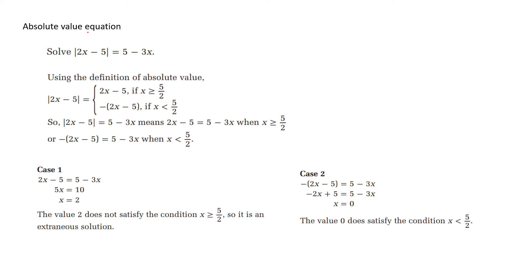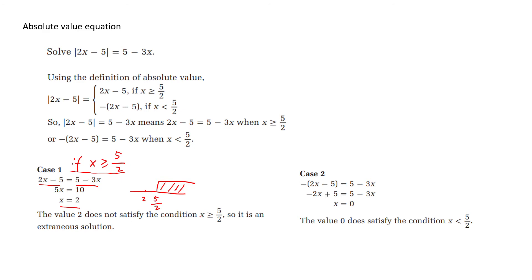Finally, we need to solve an absolute value equation. We first convert the absolute value function into a piecewise function and then solve it. For case 1, if x is greater than or equal to 5 over 2, the absolute value equals the right-hand side. Solving gives x equal to 2. But x equal to 2 does not satisfy the condition x greater than or equal to 5 over 2, so 2 is not a solution — we call it an extraneous solution, which just means not a valid solution.